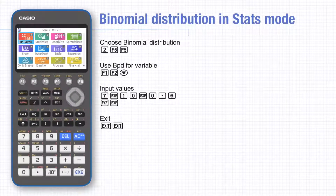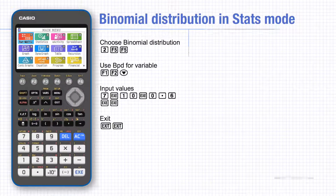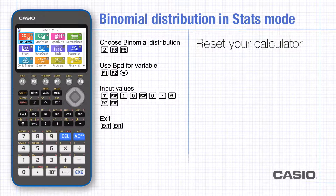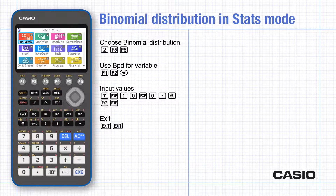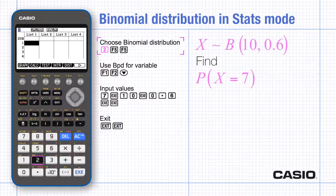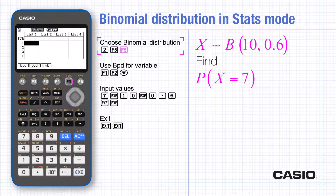In this tutorial we're looking at calculating probabilities using the binomial distribution. We also look at how the CG50 can find a critical region for a hypothesis test based on the binomial distribution. You may find it easiest to reset your calculator before starting so that the screen matches the one in the video. The binomial distribution is found in stats mode, distributions and binomial.